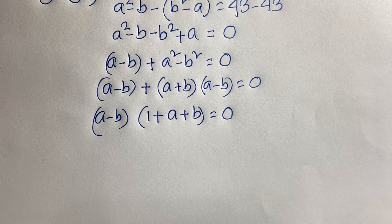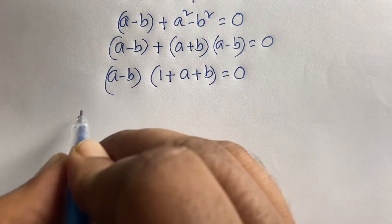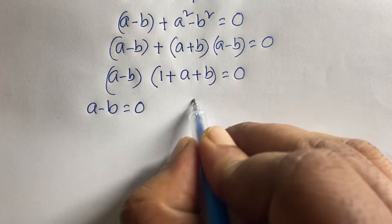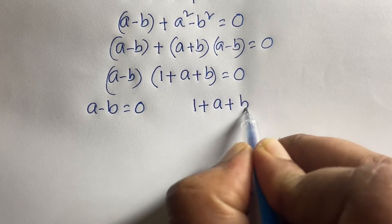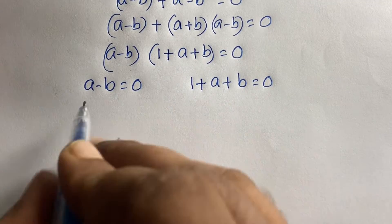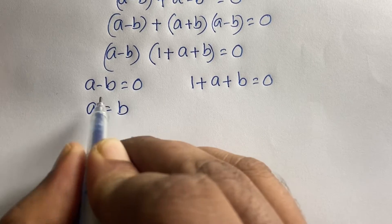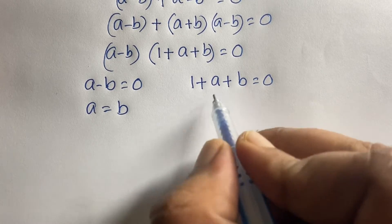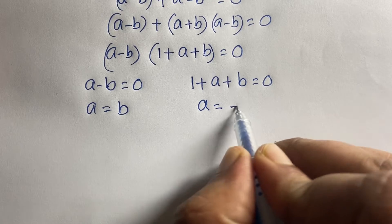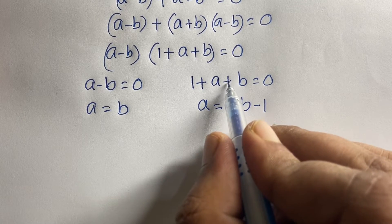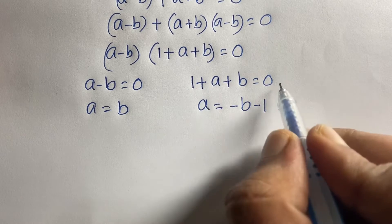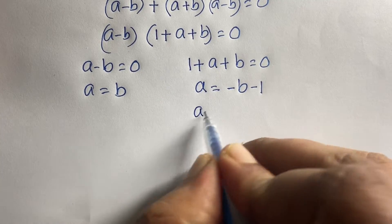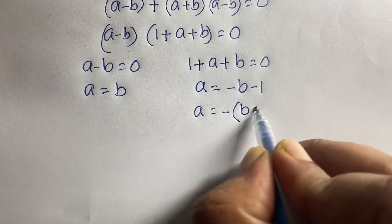We have two cases. Our first case is A minus B equals 0, which gives A equals B. Our second case is 1 plus A plus B equals 0, which gives A equals minus B minus 1, or A equals minus(B plus 1).